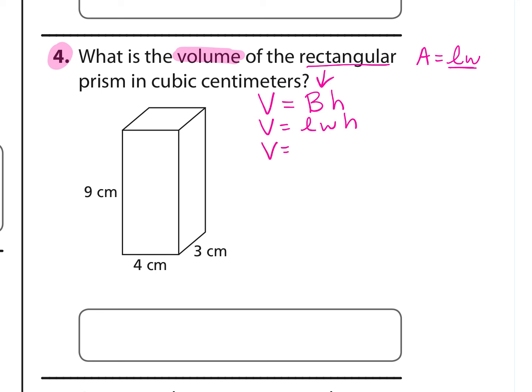If we take that base down here, we know that length is 4 times width is 3, and then the height is how tall it is, and it's 9. So 4 times 3 times 9 is 108. The volume is 108 cubic centimeters.